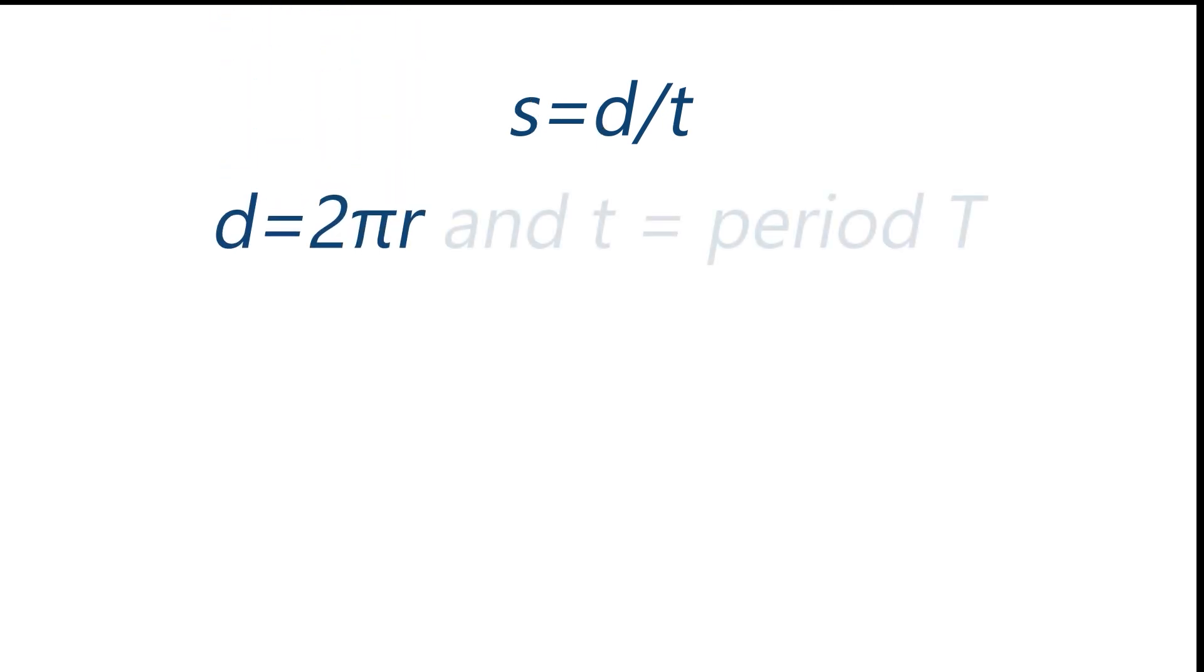And we also know that the time for one rotation is capital T the period. Therefore substituting in speed is distance over time we quickly get that speed is equal to two pi r over the period T.